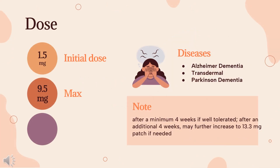Dose — Alzheimer dementia, Oral: Indicated for mild to moderate dementia of the Alzheimer's type. Initial dose: 1.5 mg PO Q12HR. Increase by 1.5 mg per dose Q2 weeks, not to exceed 6 mg PO Q12HR. Maintenance: 3–6 mg PO Q12HR. Higher end of the range may be more beneficial.